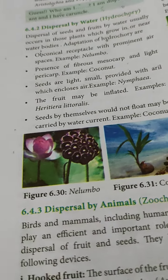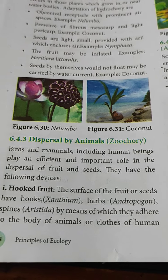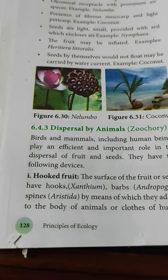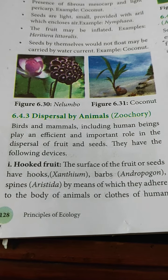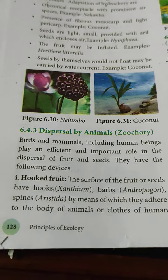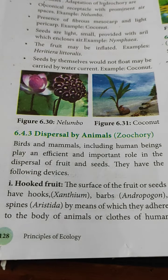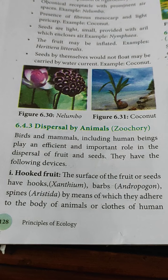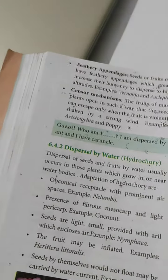Now dispersal by animals, called zoochory. Birds and mammals, including human beings, play an important role in the dispersal of fruits and seeds. The devices include hooked fruits — the surface of fruits and seeds have hooks, spines, or similar structures by which they adhere to the fur of animals or the clothes of human beings and get dispersed. Examples: Xanthium, Andropogon, and Aristida.